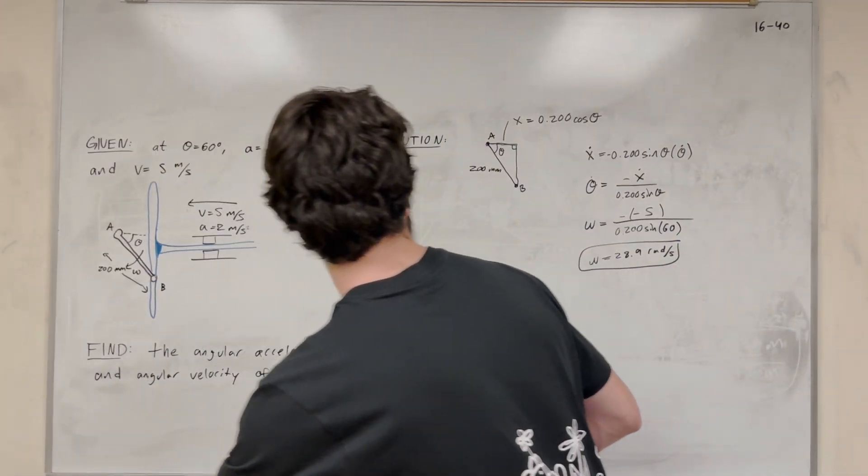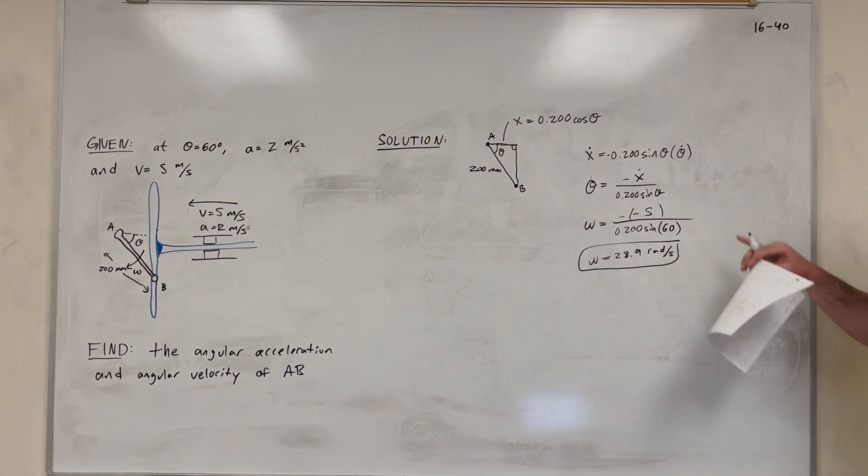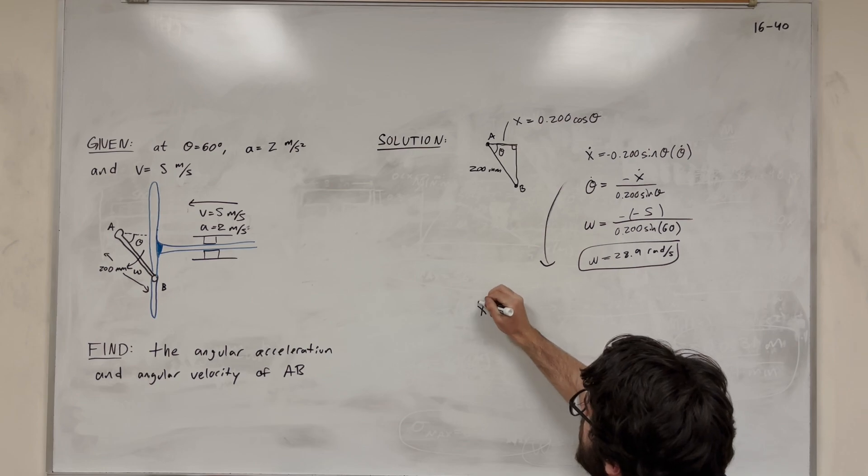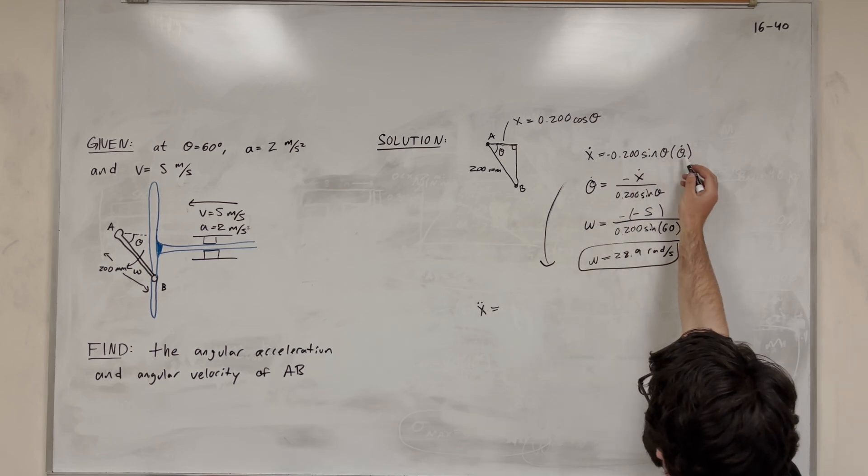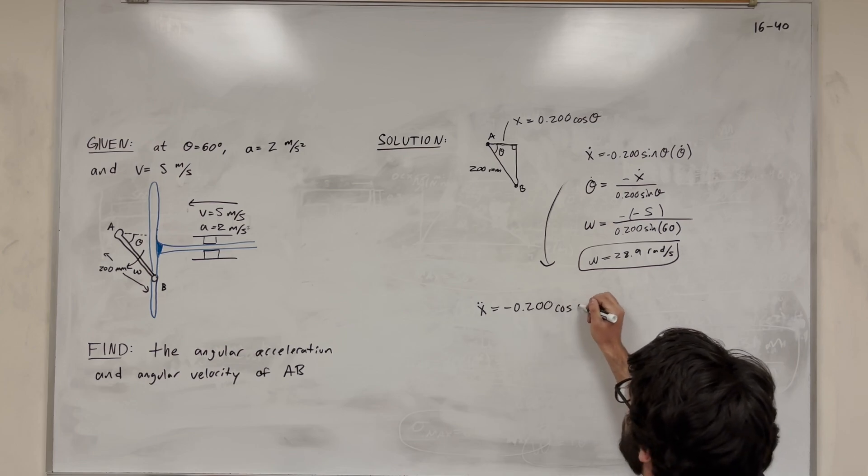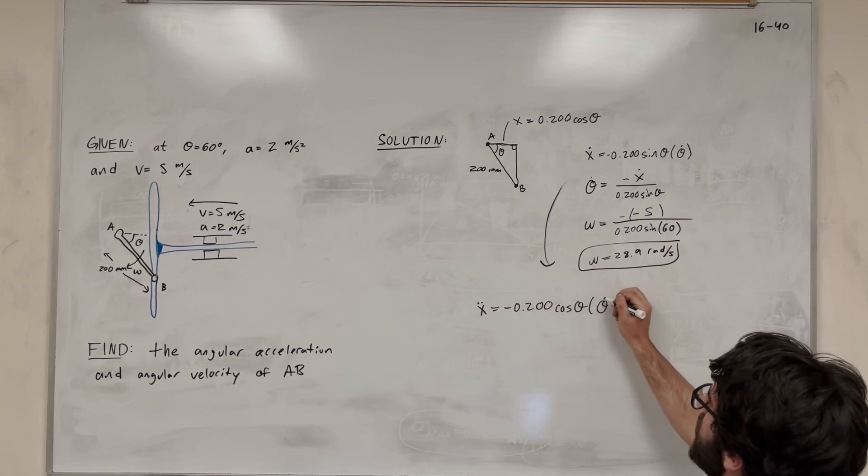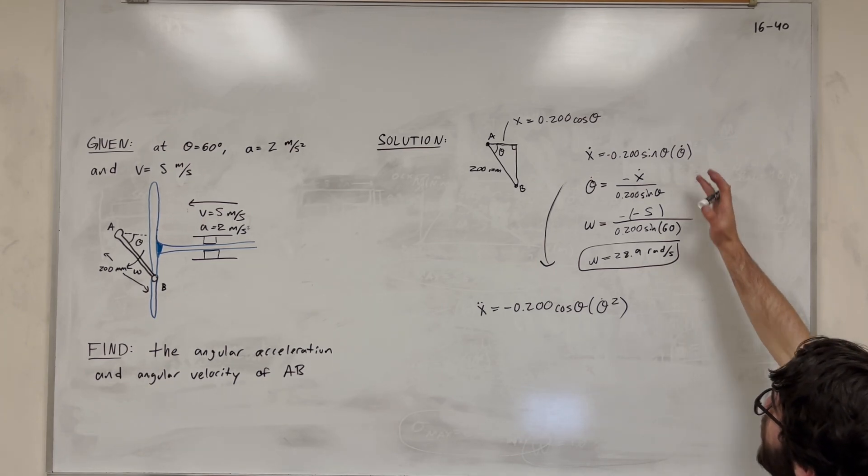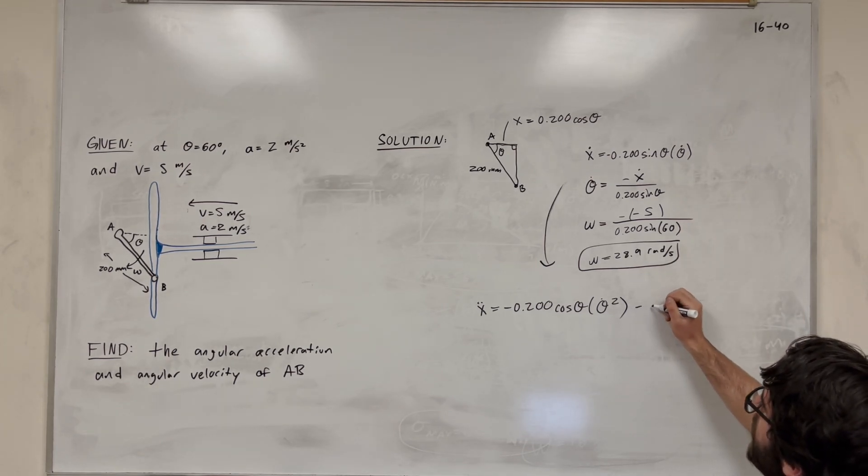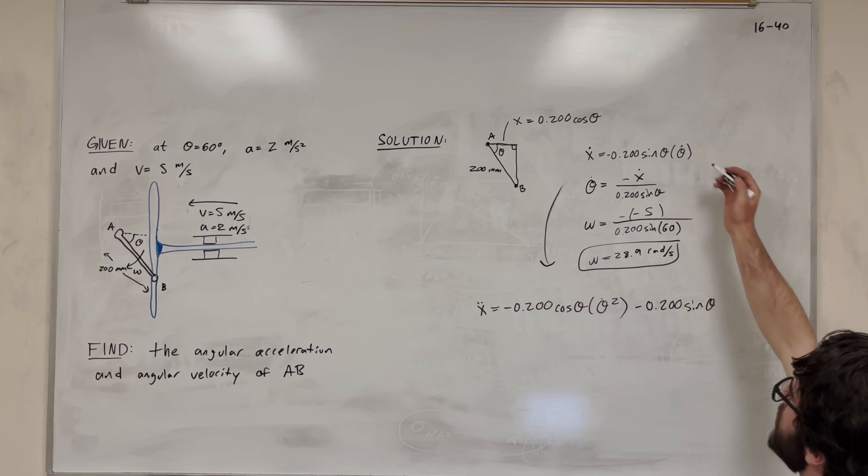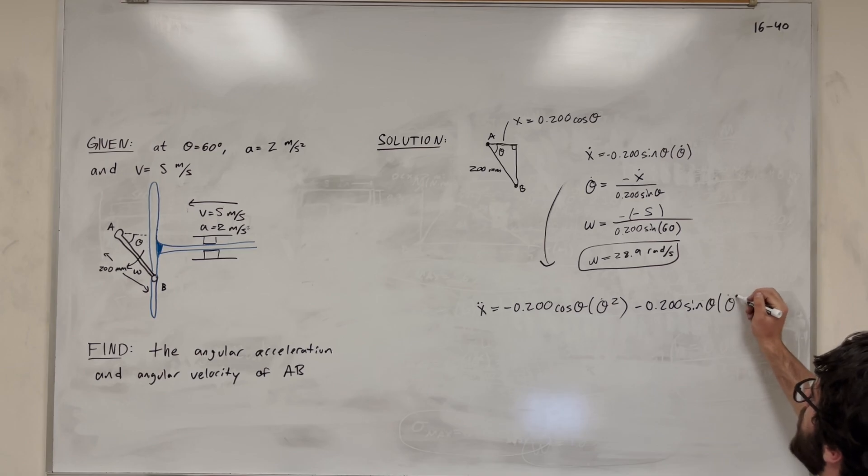So you can probably guess how we're going to do that. We're going to take another time derivative starting here. Because we know the acceleration, we know x double dot. So we're going to take this time derivative. So we're going to do x dot dot. So let's start by taking the derivative of the first part. So I'm going to get negative 0.200 cosine of theta. And then this theta dot is going to get squared because it's going to be another theta dot created by a product rule. And then we're going to need to do another one because we need to multiply by that on the next. So minus 0.200 sine of theta. And this is the derivative this time. So it's going to become theta double dot.